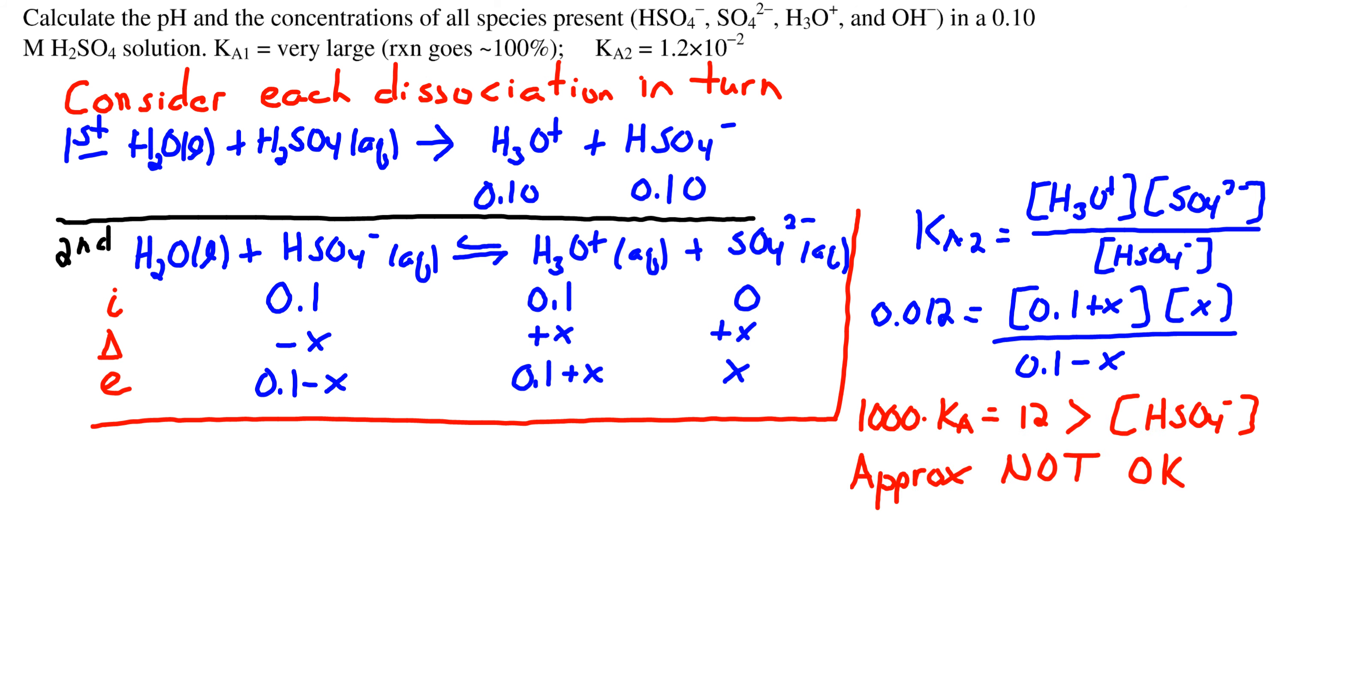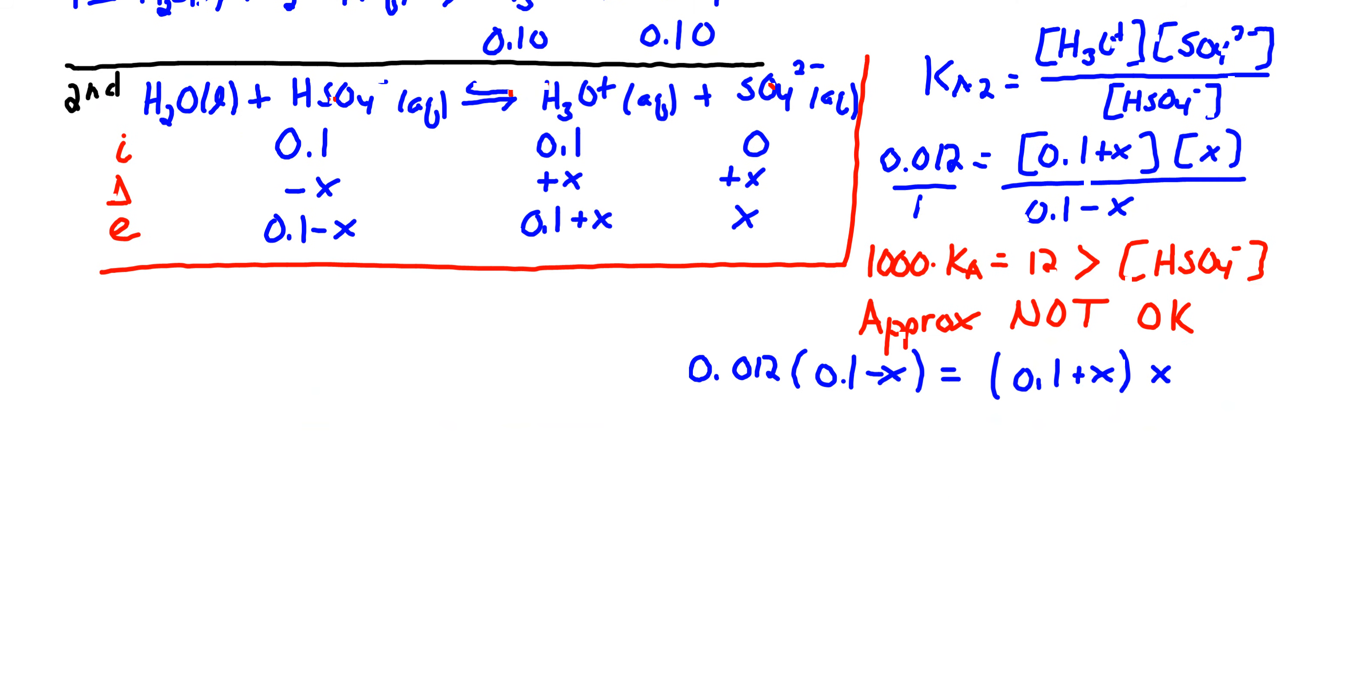We multiply Ka by a thousand and get a value of 12, which is much larger than our initial concentration. So our approximation is absolutely not okay. We're going to start the algebra.